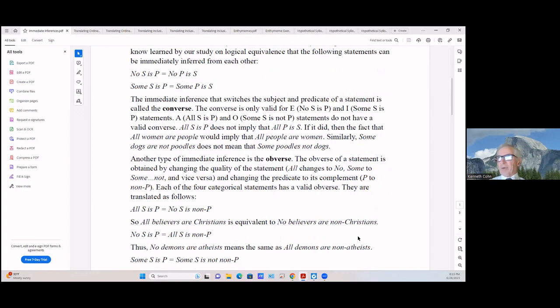It's a logical inference. The immediate inference that switches the subject and predicate of a statement is called the converse. The converse is only valid for E and I. You remember the four corners: A, E, I, and O. A is all S is P, and directly across the top is E, no S is P. So the converse is only valid for E and I. No S is P is E and the I form is some S is P which is directly below on the left-hand side of the square at the bottom.